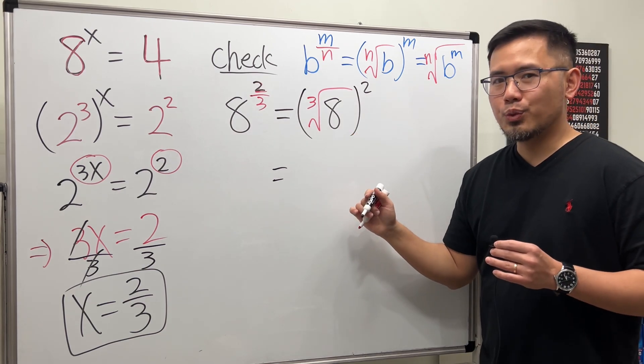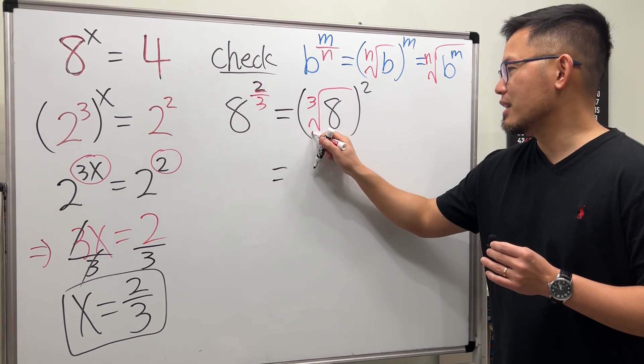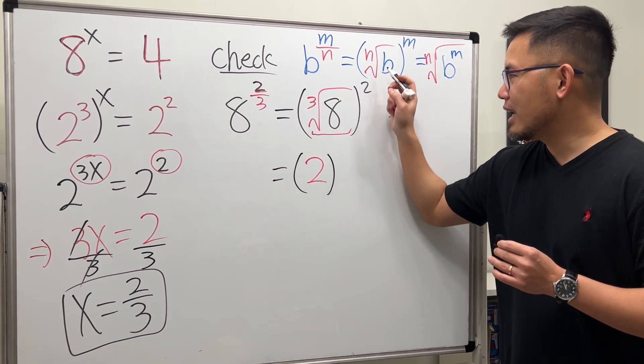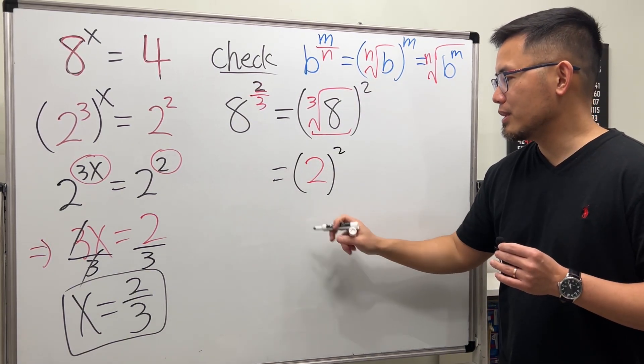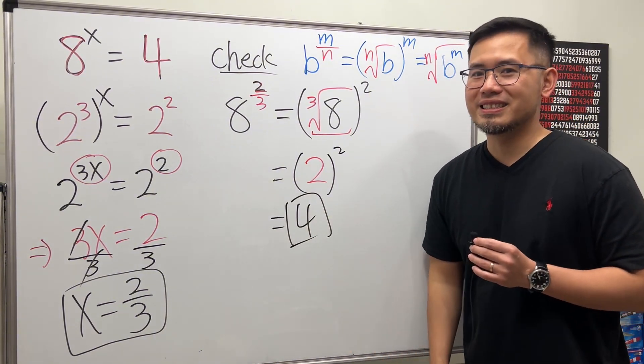Cube root of 8 is equal to what? What times what times what gives us 8? The answer for that is 2, so this right here is 2. And then after that we square that. Finally, the answer is indeed equal to 4, just like that. Now go ahead and try this question on the screen and leave your answer down below and let me know.